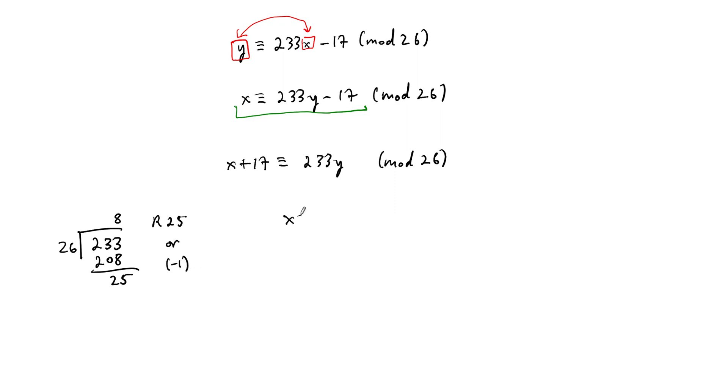So what we have now is that x plus 17 needs to be congruent to negative 1y mod 26. And then we multiply back through. We multiply everything by the negative 1 because the inverse of negative 1 is negative 1. So it's a nice number to have to deal with.